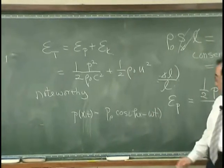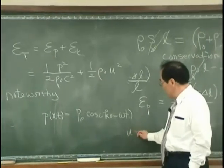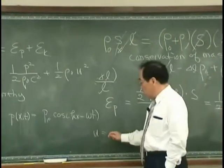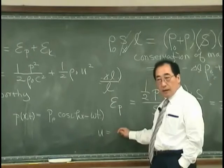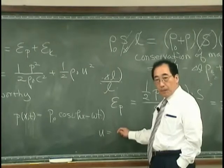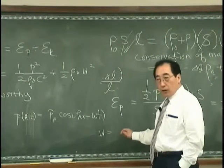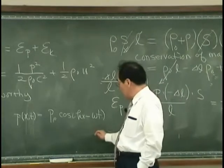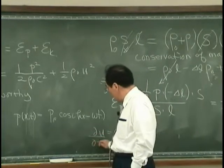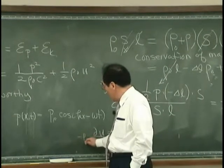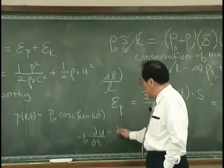Then the velocity U is simply what? According to the Euler's equation, we can calculate the velocity. du dt minus rho 0, because that is dp dx.